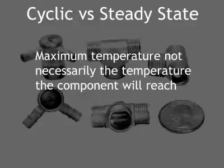The 3,000 degree piston exposures are a brief portion of each cycle, while the turbine wheels are exposed to a steady state flow of hot gases and reach a steady state temperature of 2,200 degrees Fahrenheit.